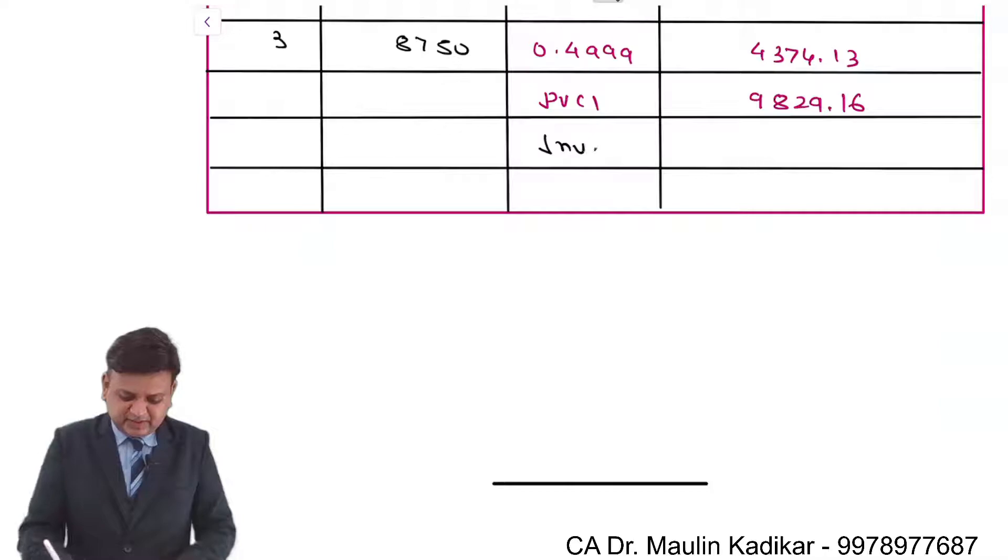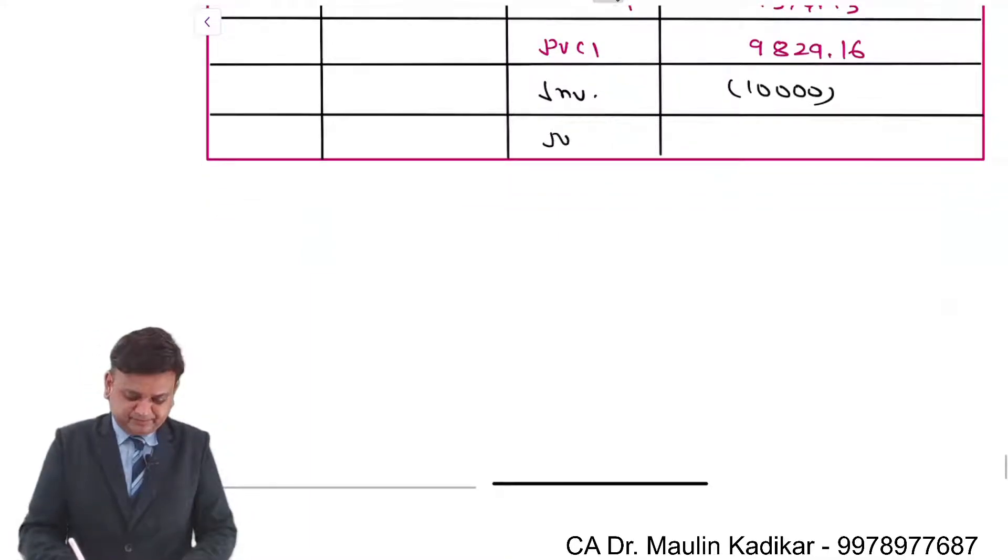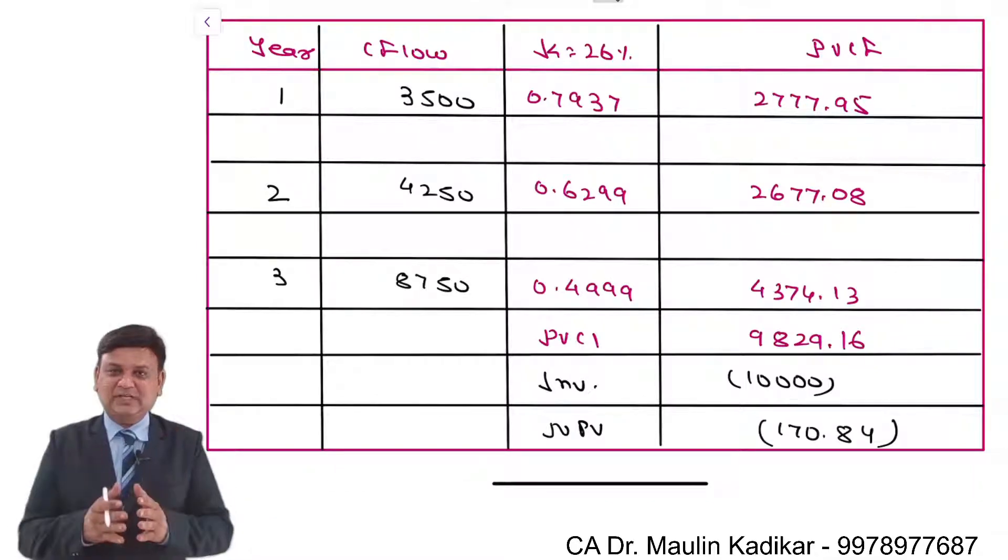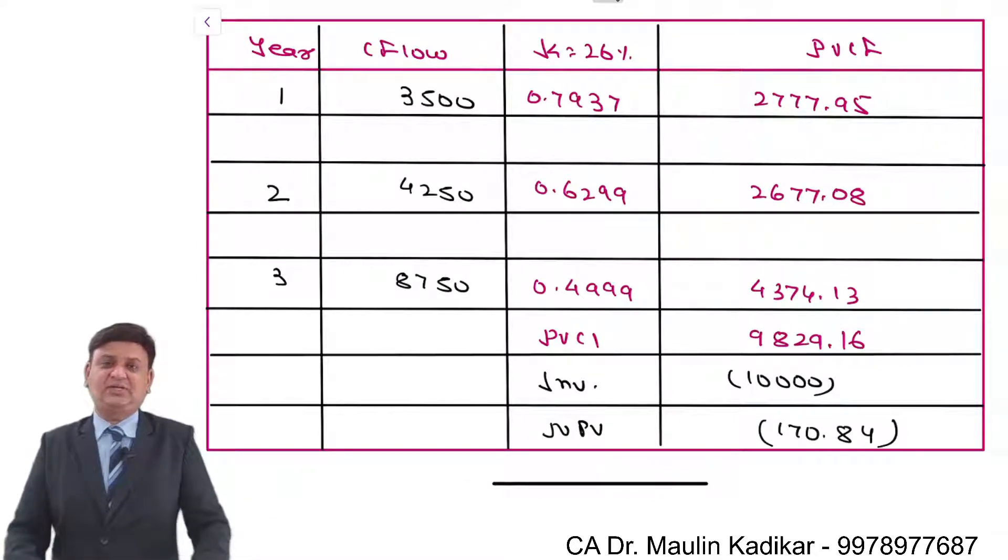From that investment will be deducted 10,000. So now we have got positive NPV at 24%, negative NPV at 26%, difference between both of them is within 3%, now they can be interpolated for IRR calculation.